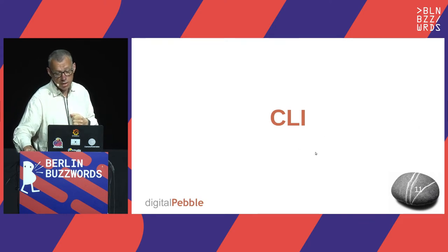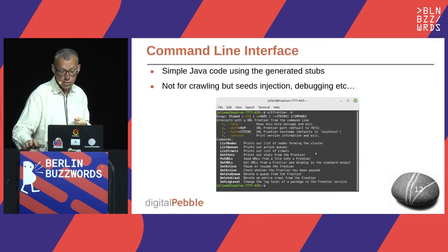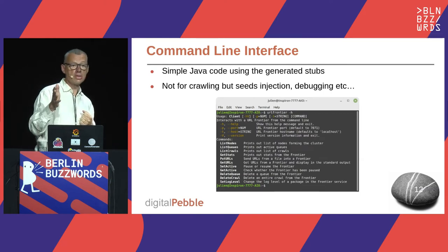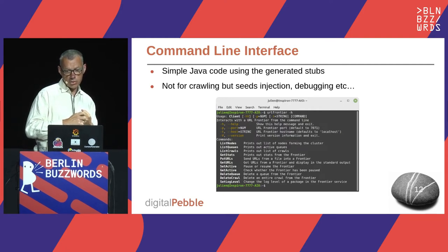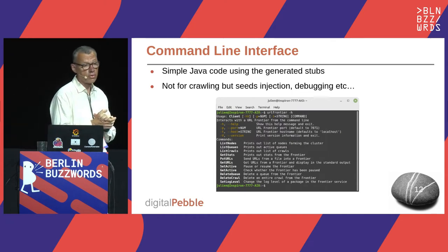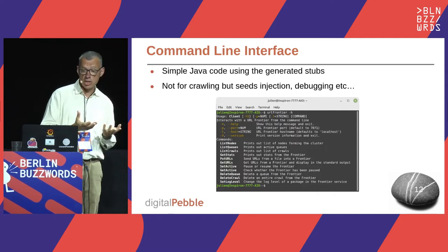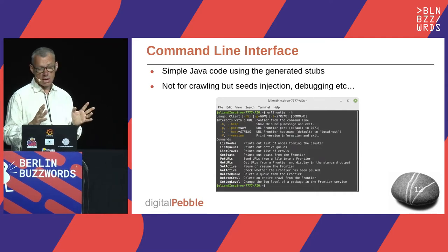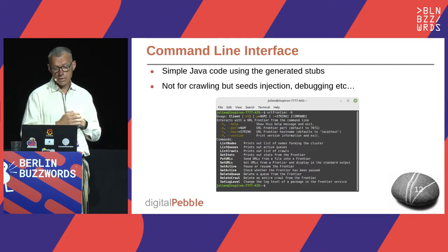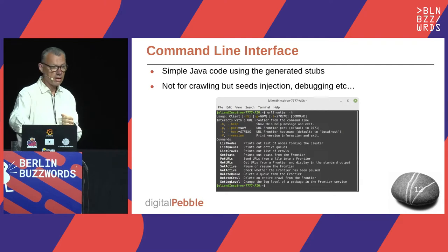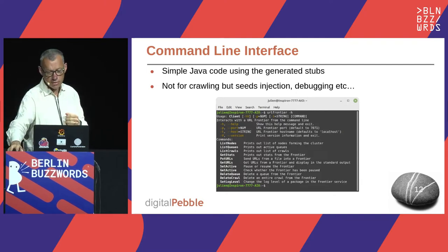There's also a command line interface — very straightforward, implemented in Java using the code stubs generated from the API's protocol buffer file. It's not something you'd use for crawling itself, but rather for seed injection, debugging, and monitoring the state of the frontier. The commands mirror the methods defined in the URL Frontier API.